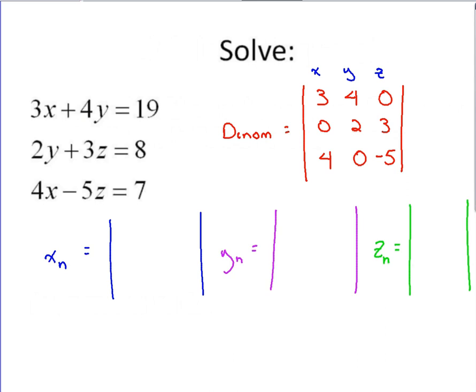Okay, so to set up for x, we're going to go back, use the denominator matrix as a guide. We're going to take the x column out, replace it with the constant values of 19, 8, and 7. And the other two columns stay the same.